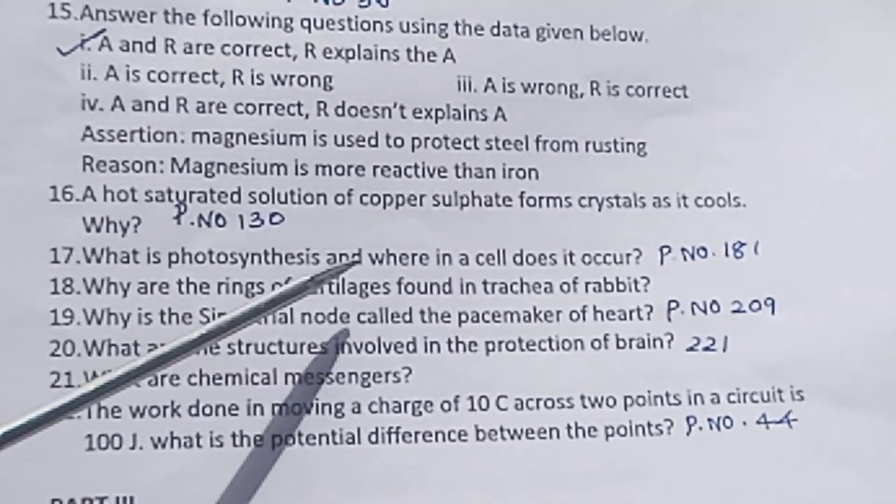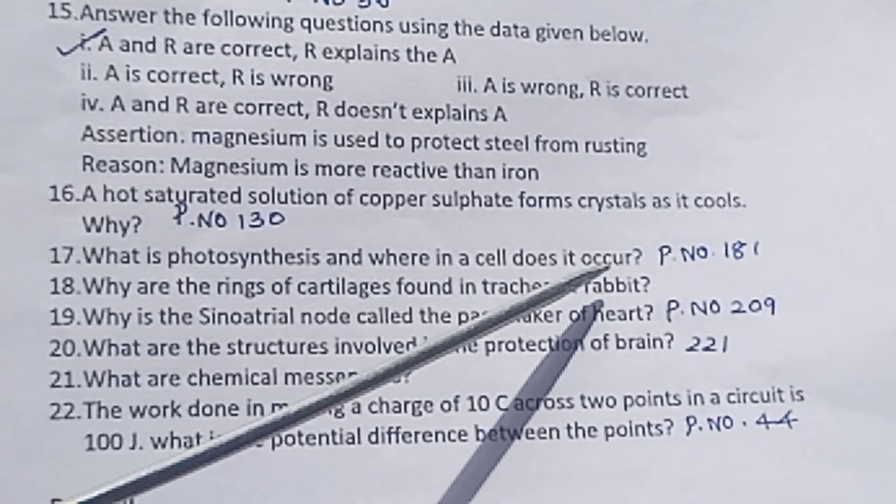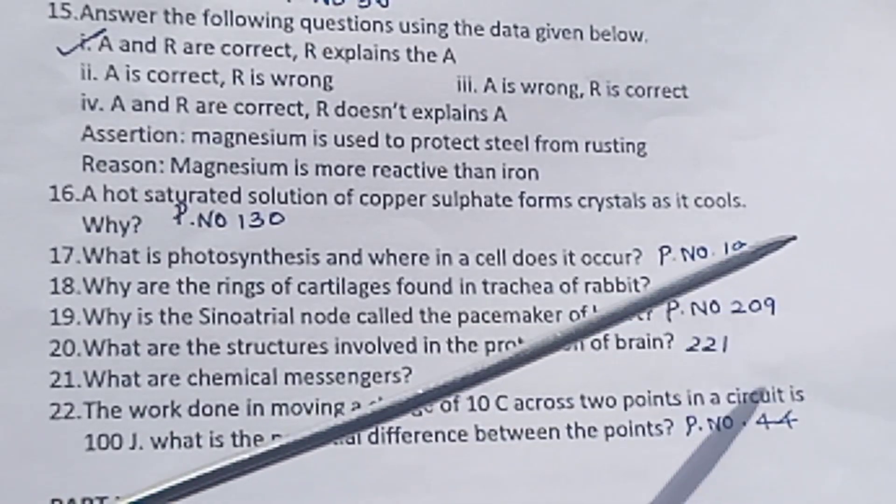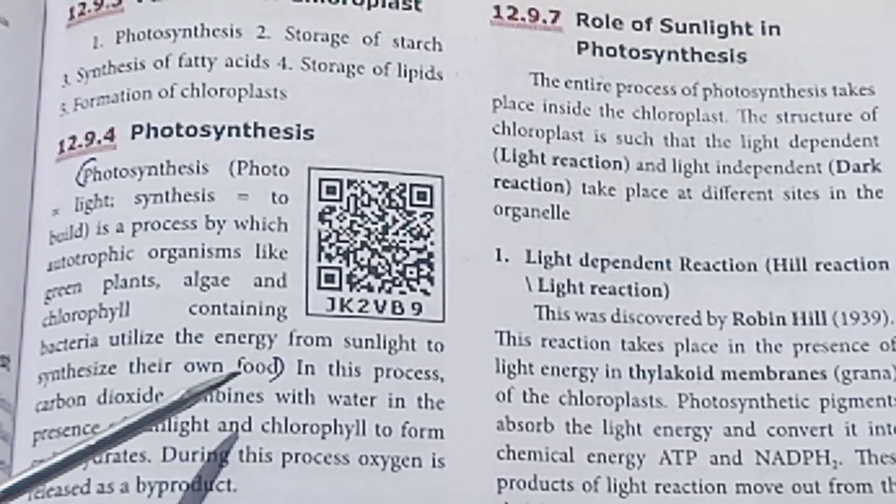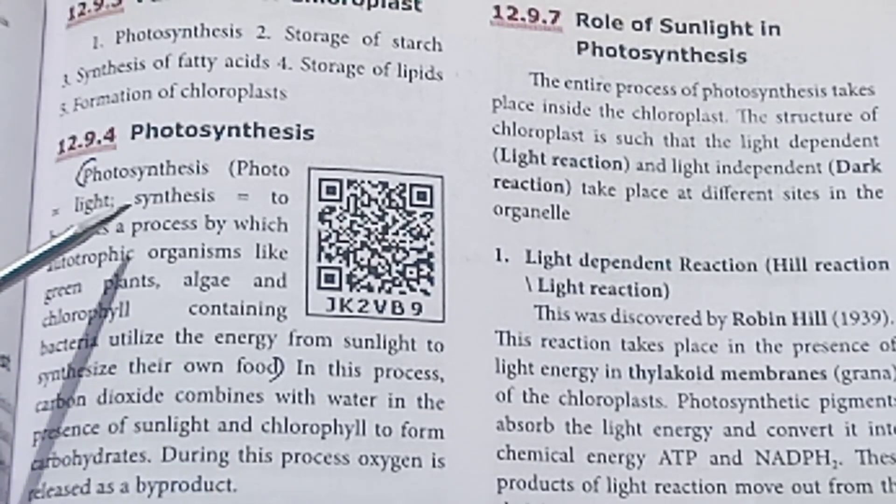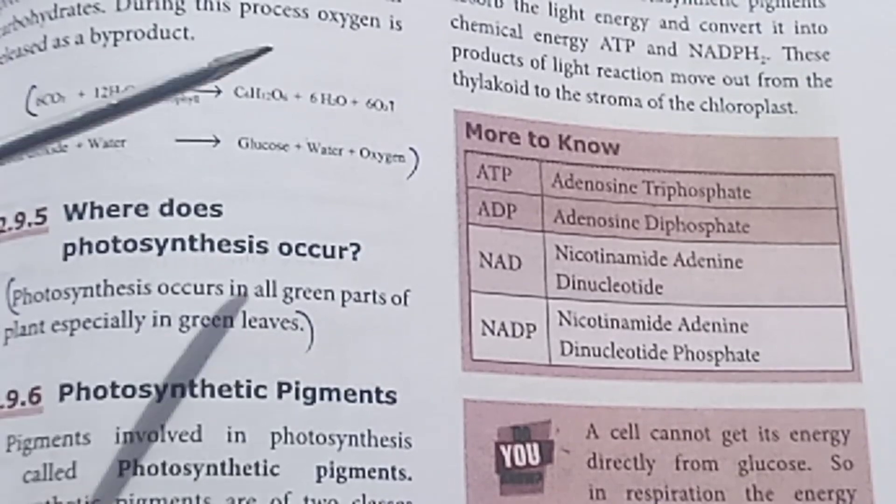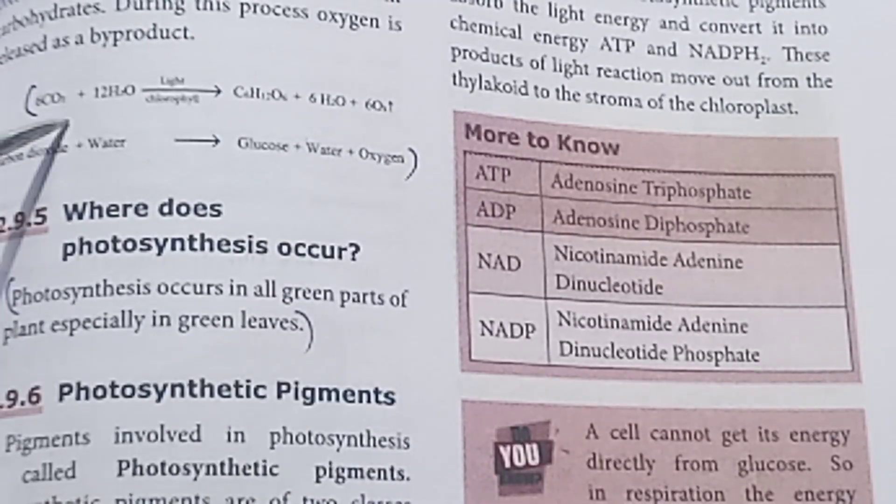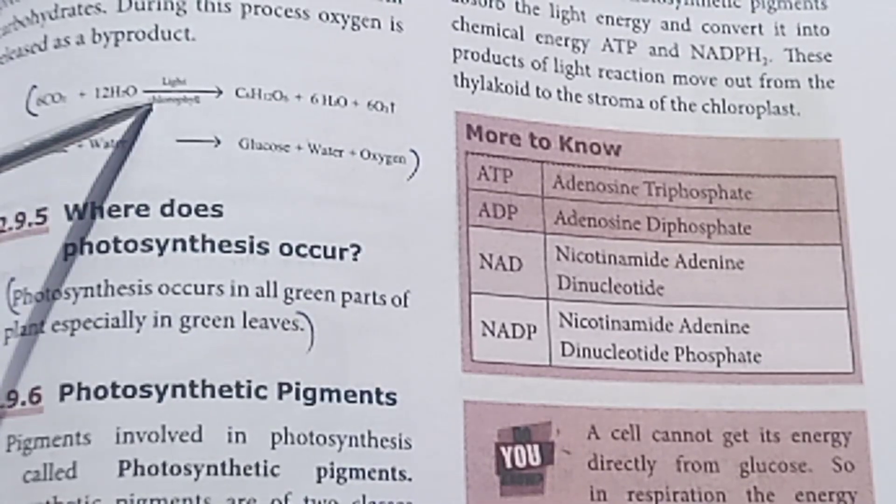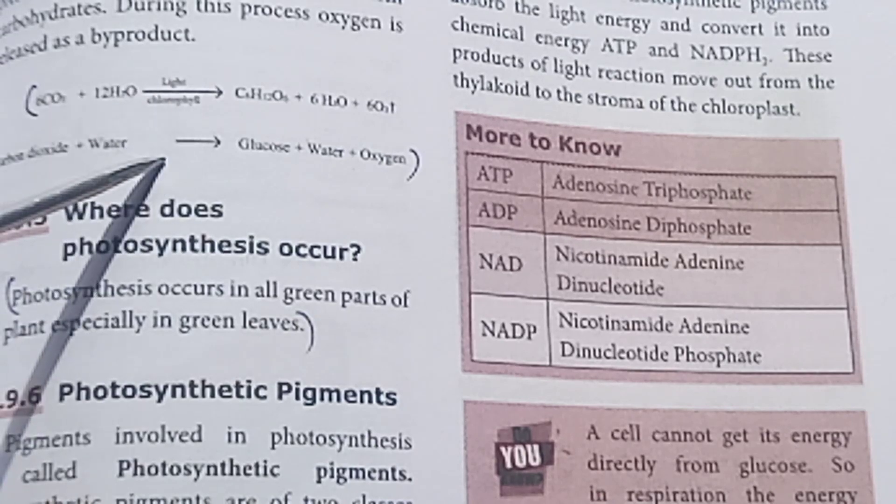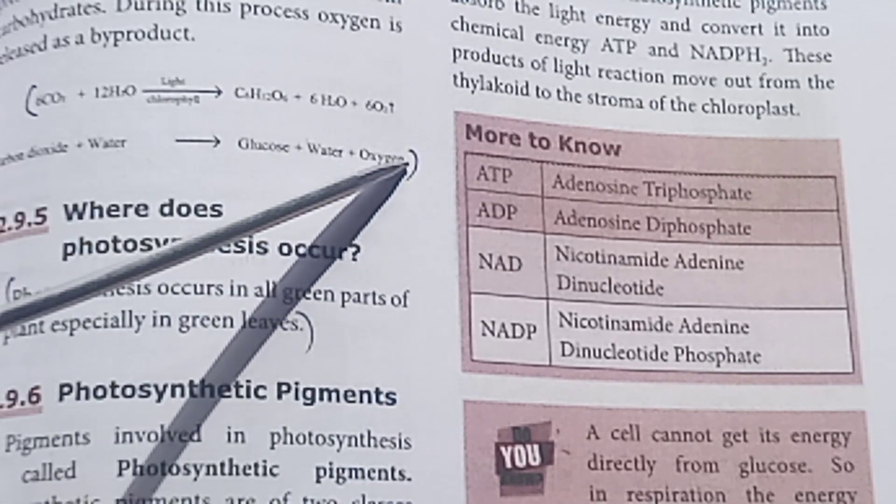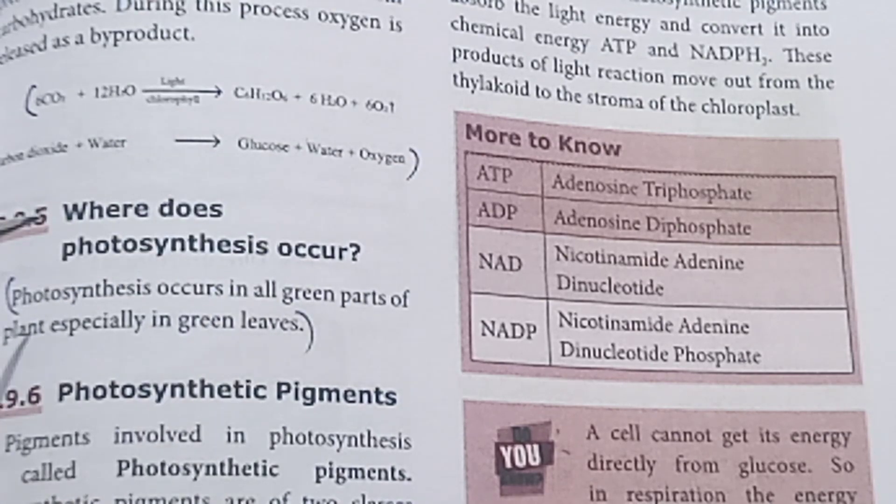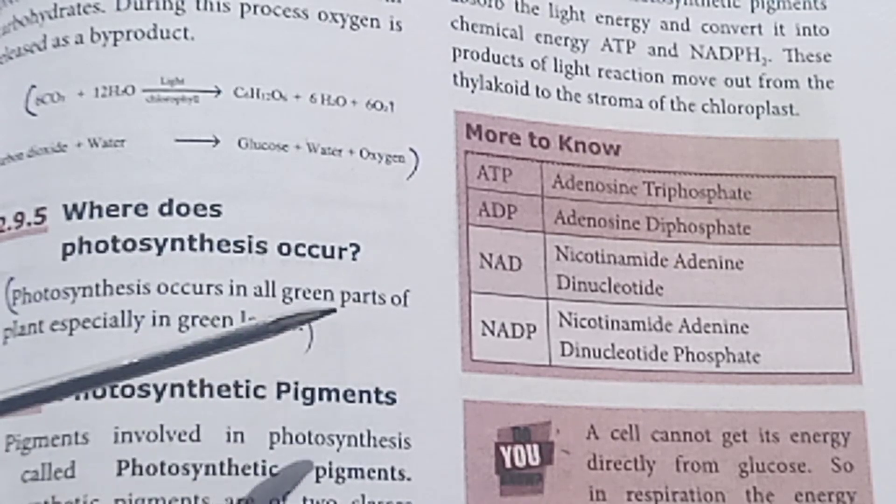Question 17: What is photosynthesis and where in a cell does it occur? Page number 181. Photosynthesis: synthesis of their own food. Equation: 6 molecules of carbon dioxide plus 12 molecules of water in presence of light and chlorophyll gives glucose plus water plus oxygen. Photosynthesis occurs in green leaves.